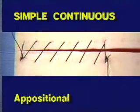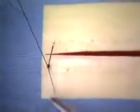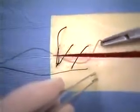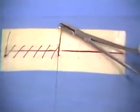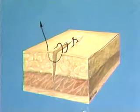The third pattern to be demonstrated is the simple continuous suture. This is an appositional suture pattern. It is made by first creating a simple interrupted suture and knotting, then only the short or non-needle end is cut short. The needle is advanced and introduced through the tissue perpendicular to the incision line, with no tying done as the suture is again advanced and reintroduced in the same way. At the end of the incision, the suture is knotted securely.